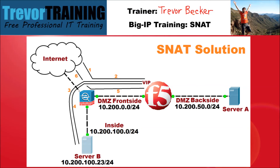SNAT Solution. SNAT solves for the problem outlined earlier by forcing the remote server to respond directly back to the BIG-IP before the connection is forwarded out to the outside client. Please refer to the SNAT Solution image below. 1. An outside client issues a request for the VIP on the F5 BIG-IP. The request is routed through the infrastructure and points to the customer's edge firewall. 2. The firewall statically NATs the destination IP address of the connection and sends it to the destination of the VIP on the BIG-IP. 3. The BIG-IP analyzes the configuration of the VIP and uses the load-balancing algorithm to select the pool member of Server B, which is located in the inside segment. The BIG-IP performs a SNAT on the source IP of the packet now, changing the source from the internet client to the BIG-IP.